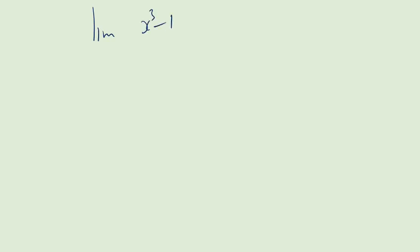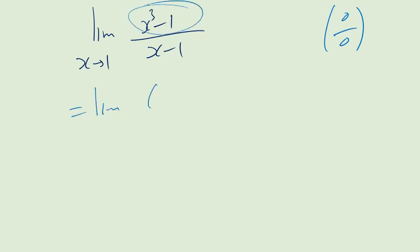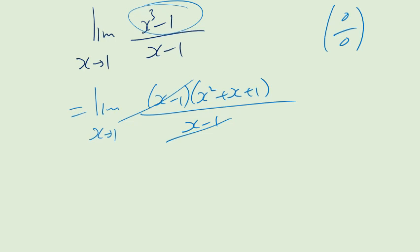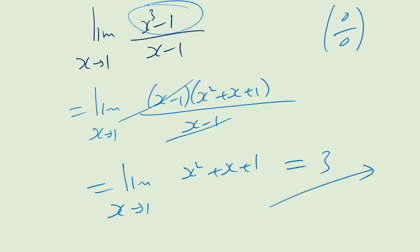Let's look at the limit of x cubed minus 1, all over x minus 1, as x approaches 1. Direct substitution gives 0 over 0 — not good. Step two: factorize. This is the difference of two cubes, so the numerator is x minus 1 times x squared plus x plus 1, all over x minus 1. That cancels, leaving the limit of x squared plus x plus 1 as x approaches 1, which is 1 plus 1 plus 1 equals 3. Absolutely beautiful.